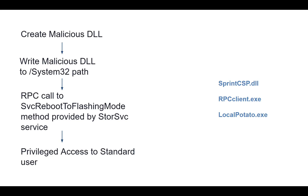When the DLL is executed, we will have privileged access because the DLL contains a malicious script that grants us elevated privileges. For this we need three files: sprint_csp.dll, which is triggered by the RPC executable; rpc_client.exe, which triggers the DLL; and the Local Potato exploit, to write the DLL to System32.